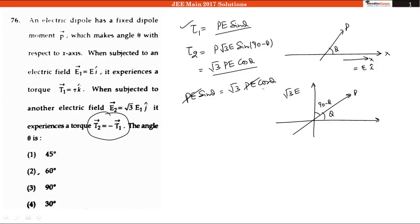So PE gets cancelled out. If I take this cos theta on the other side, I will have sin theta divided by cos theta, which is equal to tan theta equals root 3.